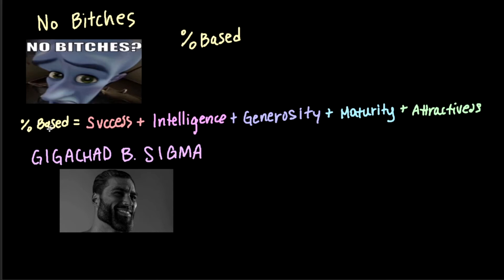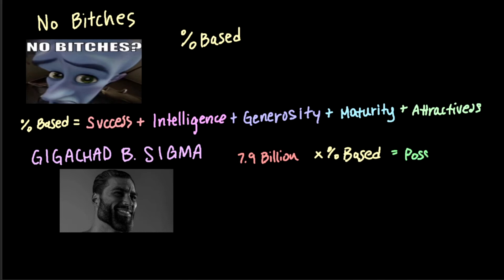Now this Gigachad B Sigma came up with this equation and these values. This percent-based is used in another calculation — percent-based, written as a proportion, is multiplied by the world population, 7.9 billion. And this is equal to the number of possible partners.